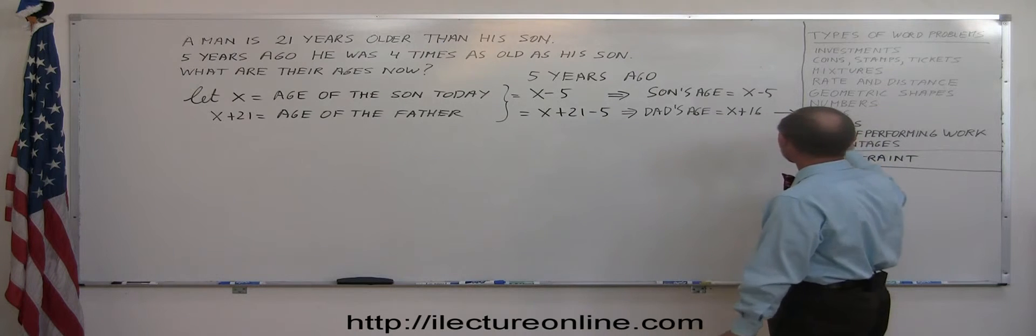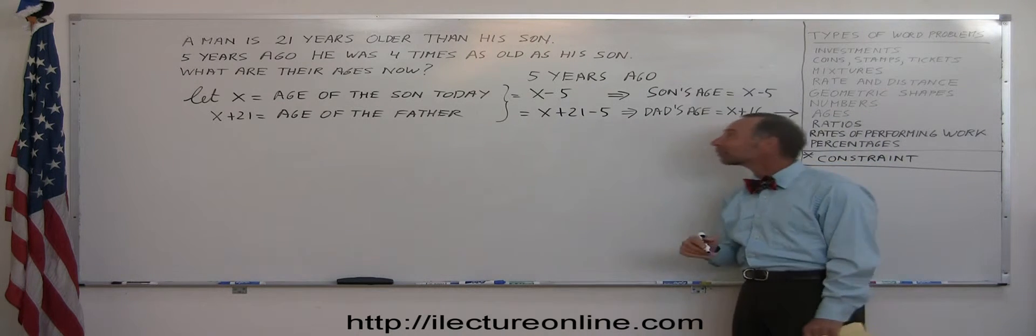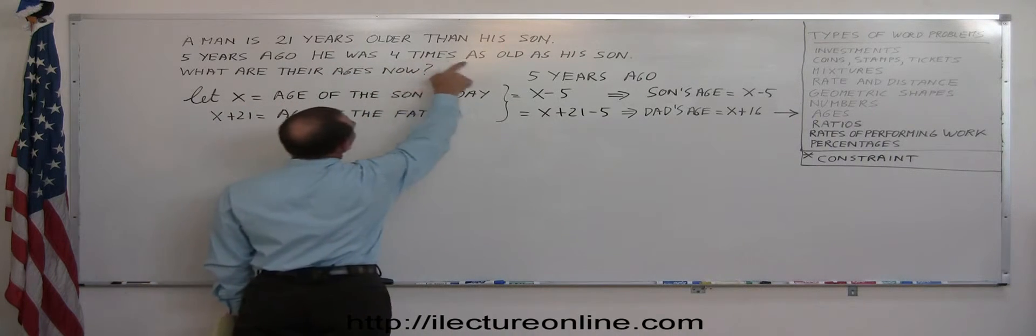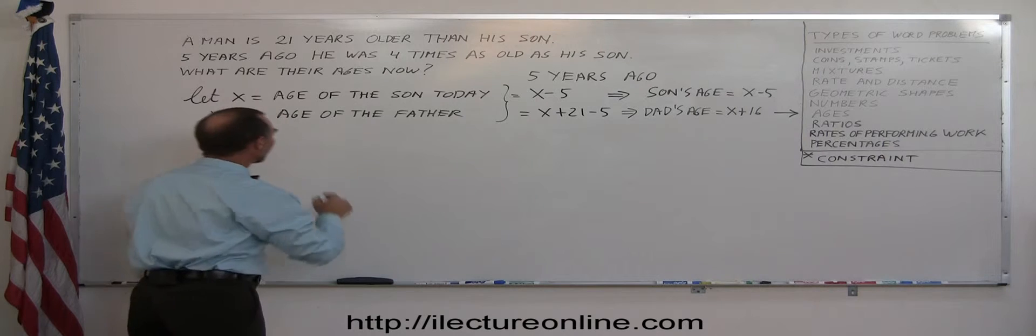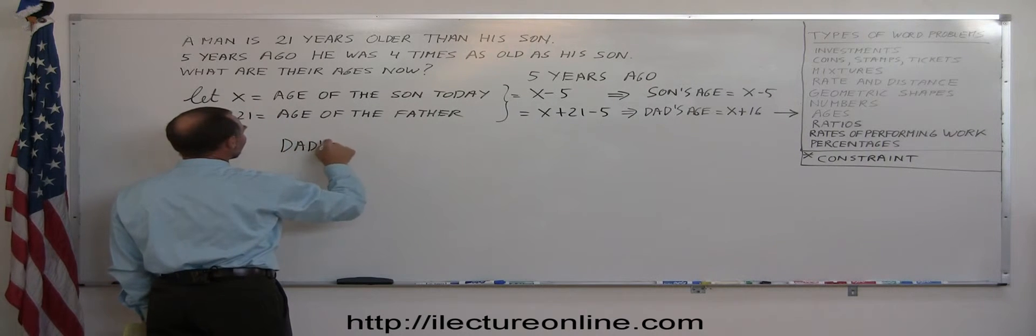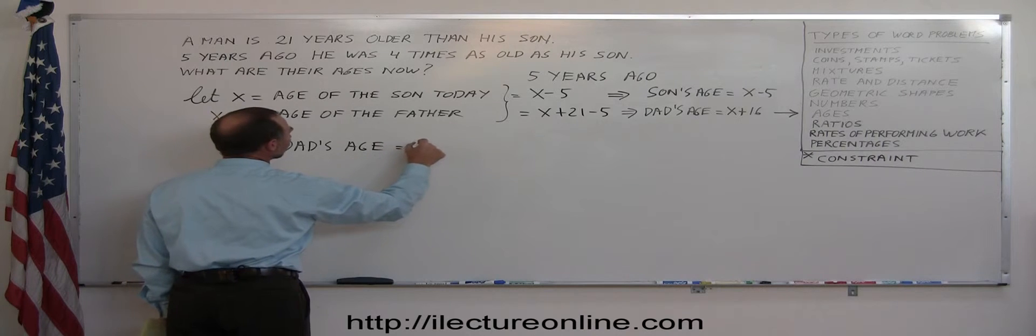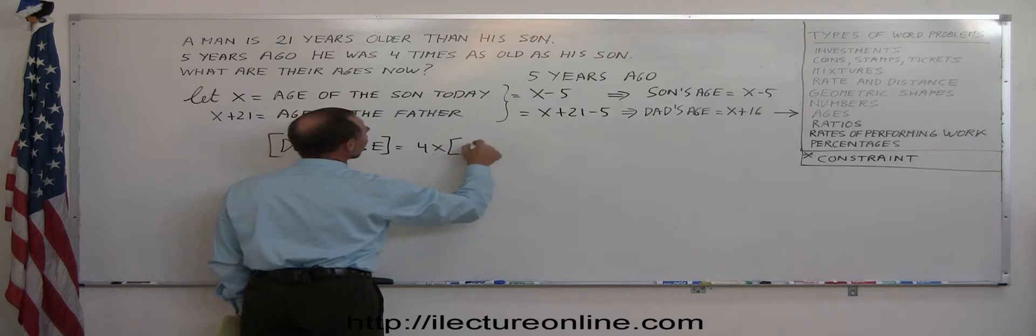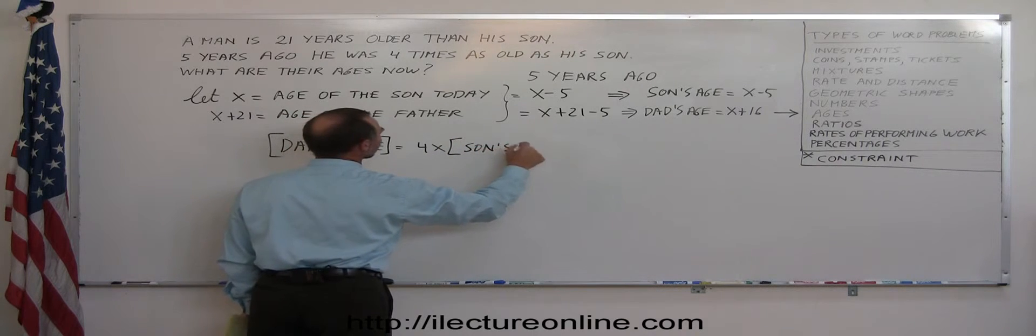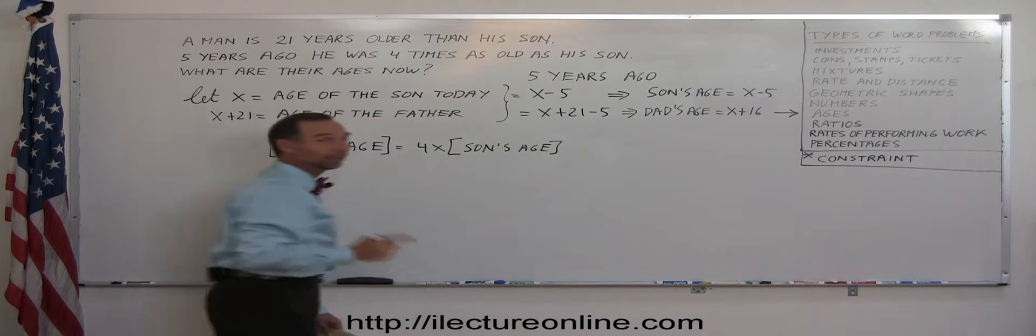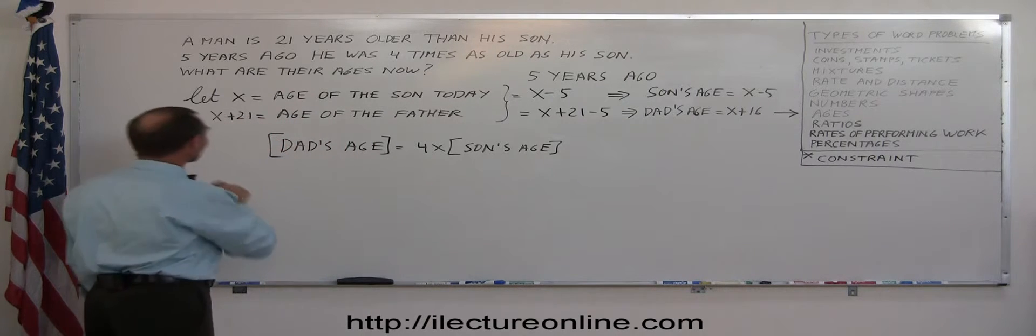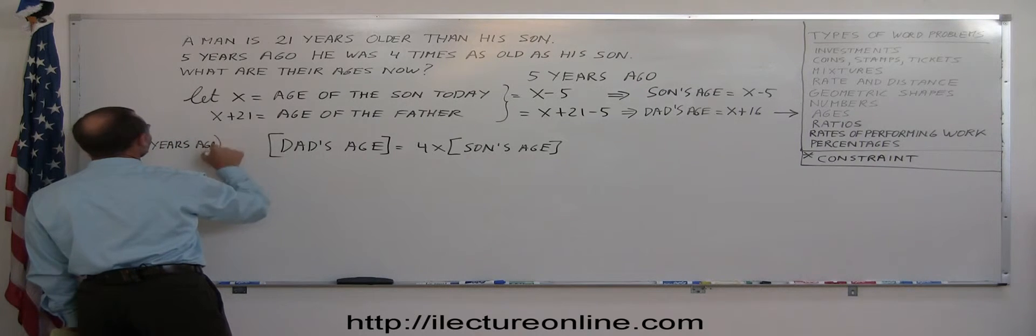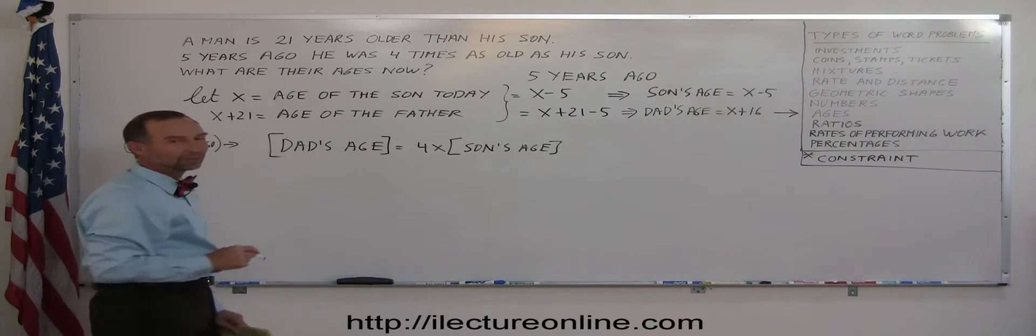And now we're ready to use the constraint to solve the problem. It says that five years ago, he was four times as old as his son. So the dad's age is equal to four times the son's age. And again, remember, this was five years ago. So we might want to write that there. Five years ago, so we don't forget. Dad's age is four times the son's age.